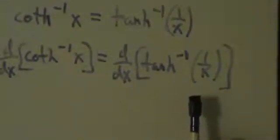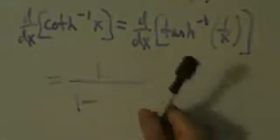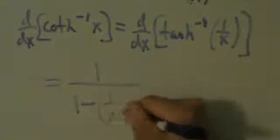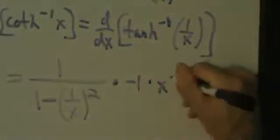The derivative of inverse tanh is 1 over 1 minus x squared. The chain rule says: take the derivative of the outer function and evaluate it at the inner function. Since the inner function is 1 over x, instead of x squared we have 1 over x squared. Then multiply by the derivative of the inner function — d/dx of 1 over x. Now, 1 over x is x to the negative 1, so its derivative is negative 1 times x to the negative 2, which is negative 1 over x squared.